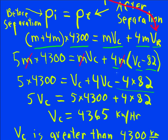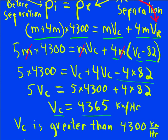I carried out that multiplication and get all my VCs together. I have 5 Vc total and add the 4 times 82 to both sides. And I get Vc is 4,365 kilometers per hour, which is greater than the original 4,300.